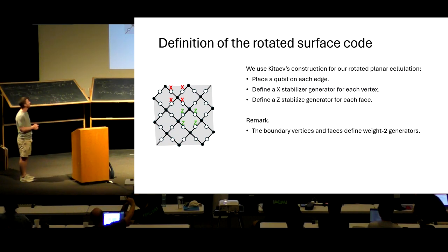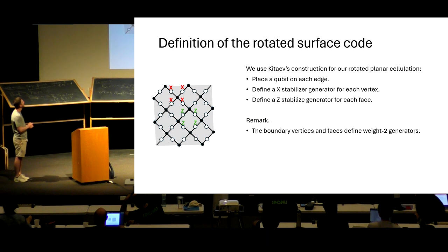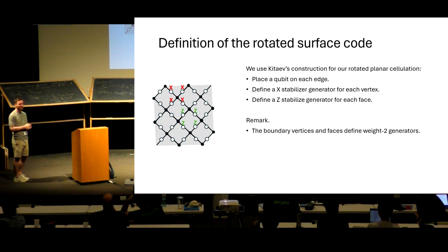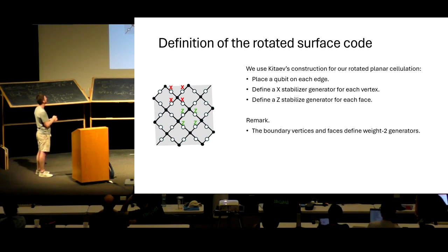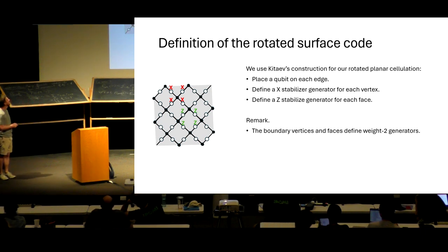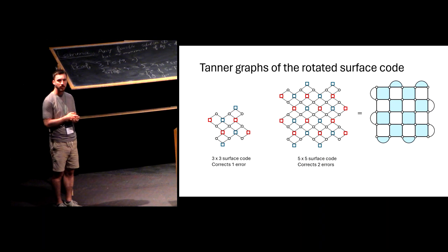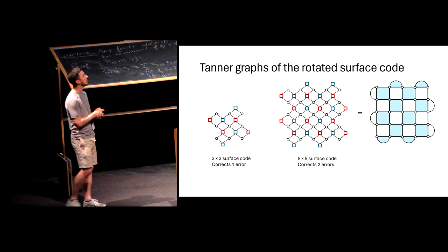You rotate the lattice to save a few qubits — it's cheaper in terms of number of qubits. Once you have that, you can define a code like last time. You have your lattice; you place qubits on edges — the white circles are qubits. This is going to be a distance-5 surface code with 25 qubits. We define an X stabilizer generator for each vertex and a Z stabilizer generator for each face. They commute because a Z generator on a face anti-commutes twice with any X generator. Some faces cut on the boundary define Z checks with weight 2. The Tanner graph of this code looks like a square grid with alternating X and Z checks inside.